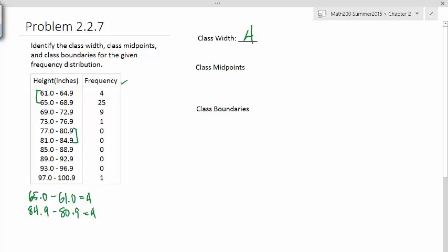Now let's find the class midpoint. There is going to be as many class midpoints as classes. We have 1, 2, 3, 4, 5, 6, 7, 8, 9, 10 classes. So we should expect to list 10 class midpoints.